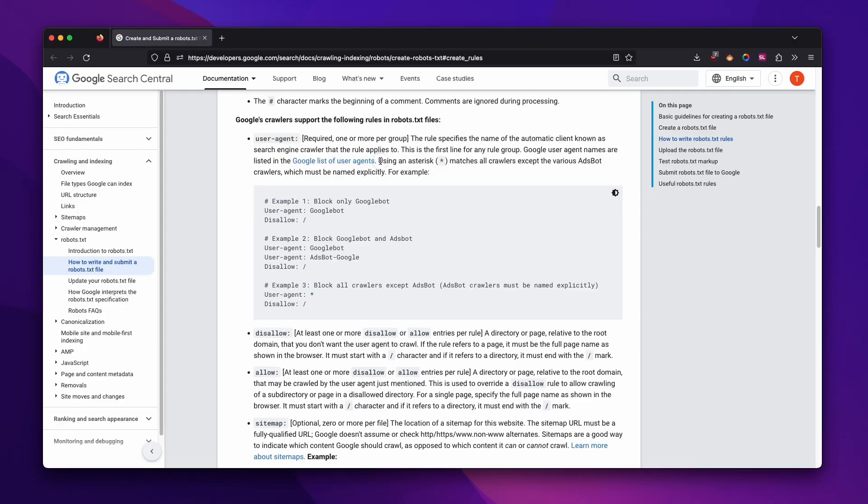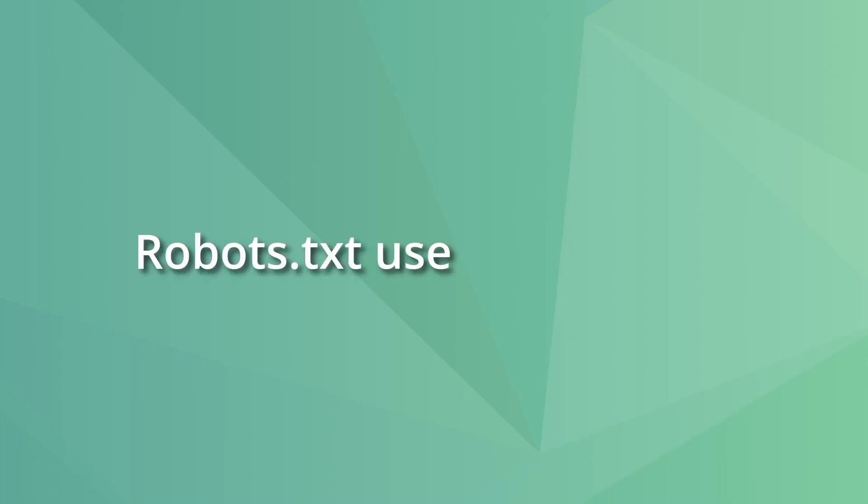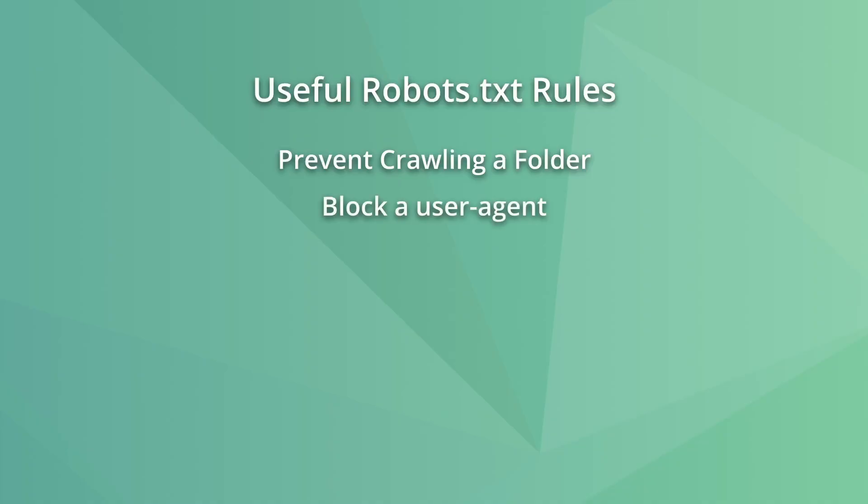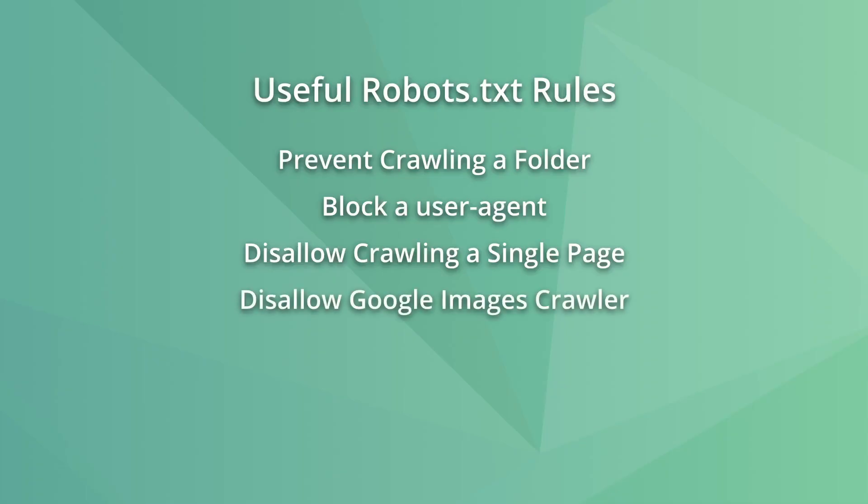Google documentation states that Ads Bot should be explicitly named as a user agent, so using the wildcard will not include Google Ads Bot. Here are some useful examples of rules you can create with robots.txt: you can avoid crawling a specific directory or folder, such as the admin pages; block a specific user agent from crawling your website; prevent crawling a single page; block Google Images from crawling images on your website to make them less likely to be indexed; and block specific file types.